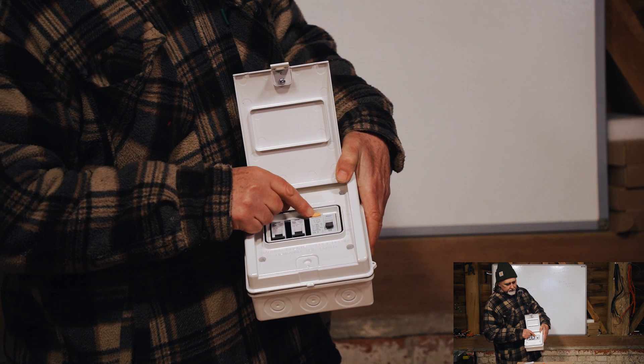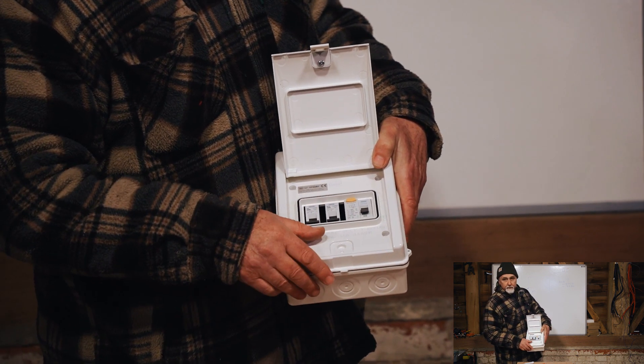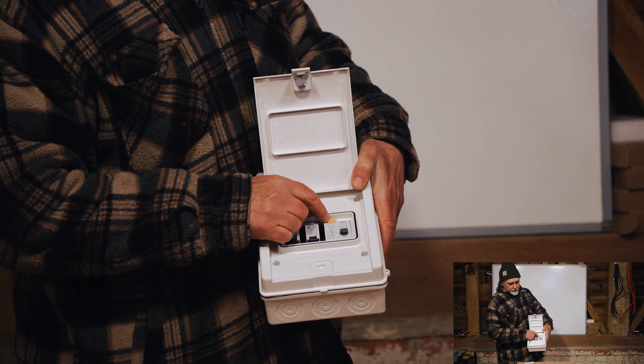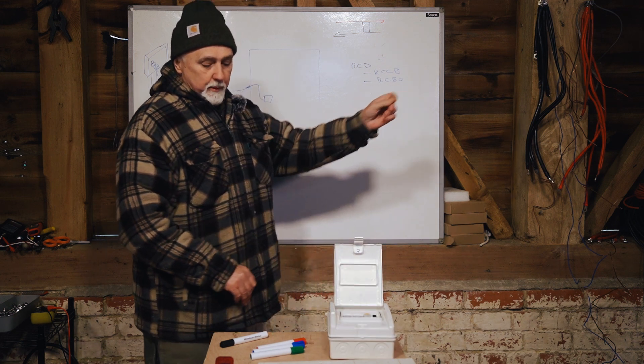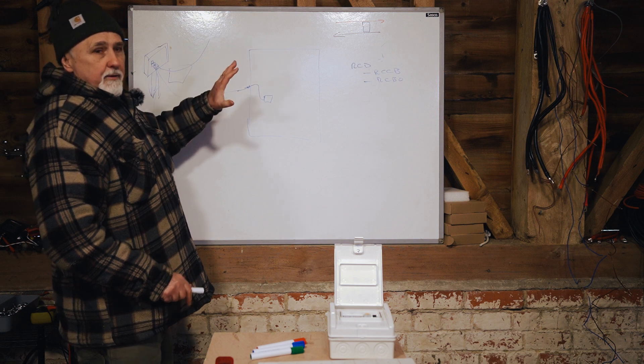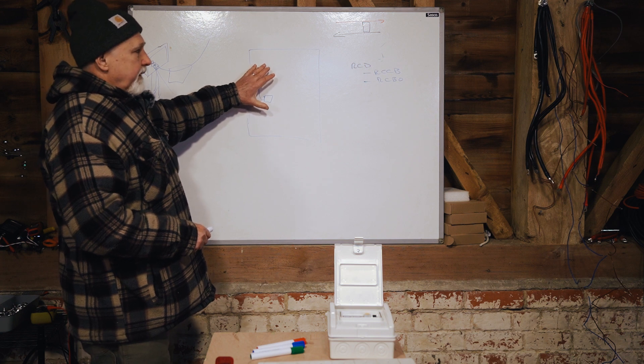So you just press it in, and that pretty much simulates a leak to earth, and this should drop. And as long as it's dropping, you're fine. If you push this in and it never drops, then you know that the unit isn't working properly. So old vehicles and new builds strongly suggest you do install an RCD.